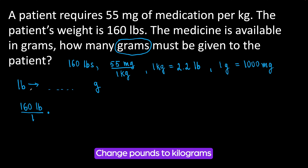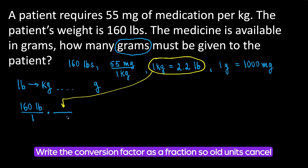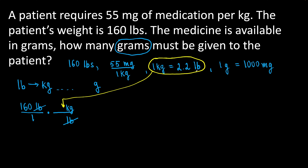First, we are going to change pounds to kilograms because the dosage is in kilograms. We are going to take the conversion factor — 1 kg is equal to 2.2 pounds — and plug it in so as to get rid of pounds and be left with kilograms. Our pounds are in the numerator, so we put pounds in the denominator and kilograms in the numerator. Pounds cancel out and we are left with kilograms. Now let's plug in the numbers: 1 kg goes on top and 2.2 pounds goes in the denominator.